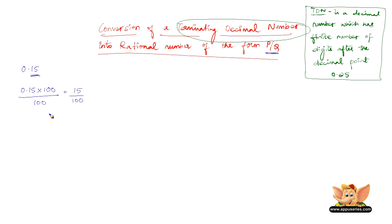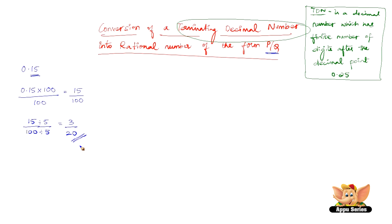Now let us find the largest number that can divide both 15 and 100. That number is 5. So 15 divided by 5 is 3, and 100 divided by 5 is 20. Therefore, 3 by 20 is the rational form of 0.15.